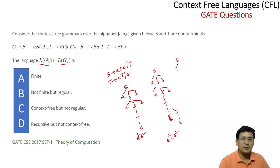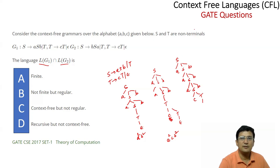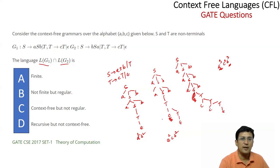Expanding further: S → ASB → A(ASB)B → A(A(ASB)B)B, and then S → cT, T → cT, T → cT, T → epsilon. This gives A^3 C^2 B^3. So the grammar always produces the same number of A's and B's, while C's can appear any number of times in between.